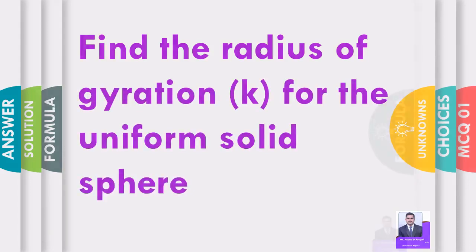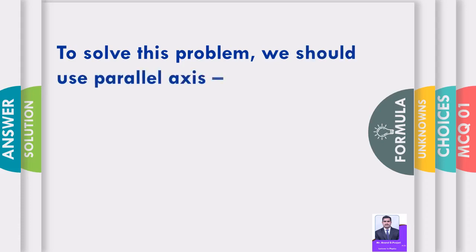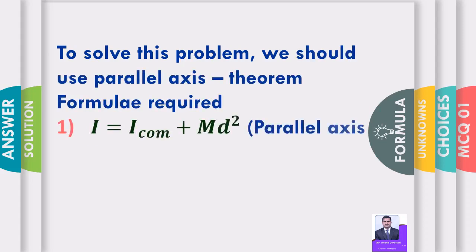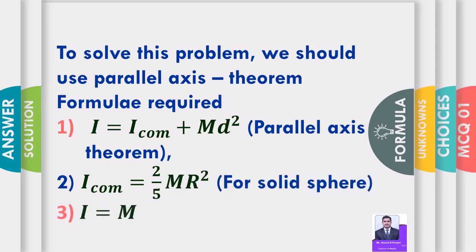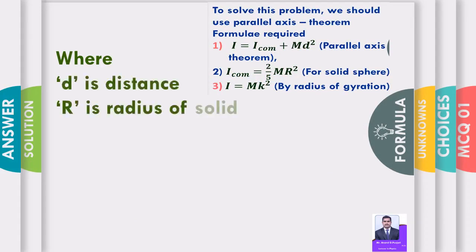To solve this problem we should use the parallel axis theorem. Formula required: I equals I_com plus m d squared. I_com equals 2 by 5 m r squared for a solid sphere. I equals m k squared, where k is the radius of gyration.